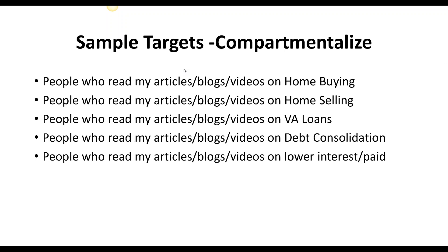Sample targets for compartmentalization: people who read articles or watch videos on home buying go into one segment. Separate content for home selling, VA loans, debt consolidation, and so forth. It's simple, but most loan officer websites don't compartmentalize or segment visitors, and they don't initiate tracking cookies on each article to identify what people were looking for. We're sending appropriate messages to the right party at the right time.